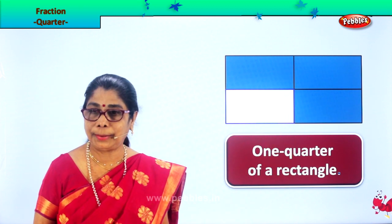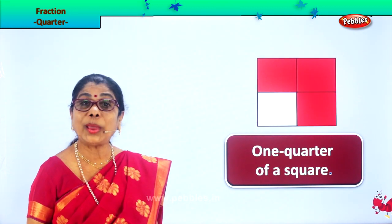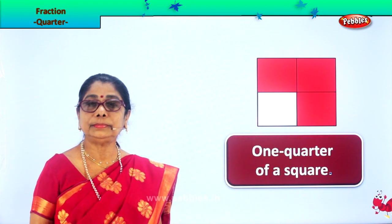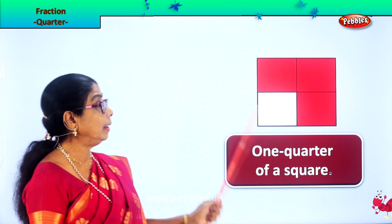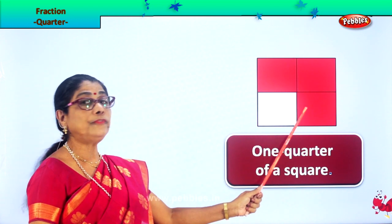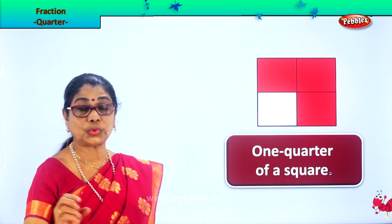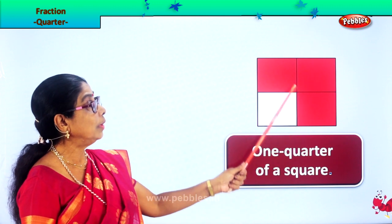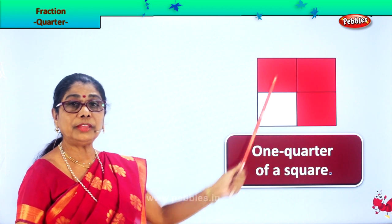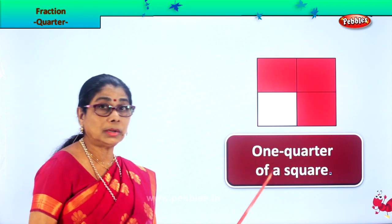Look at this. Here we have a square. What shape is this? Square. Now we are going to cut this square. Put a line — we get two halves. Then you cut again and you get four equal shapes in a square. Each is called a quarter. We have cut the square into four equal parts: one, two, three, four. This one part is called one quarter of a square.